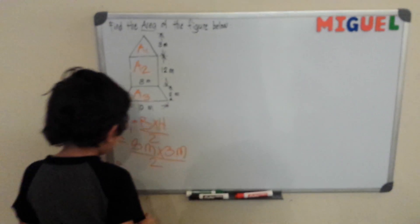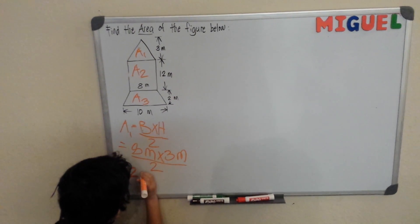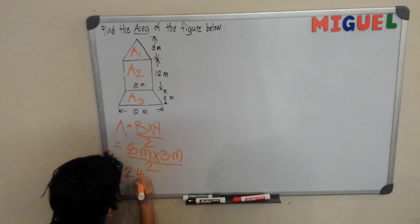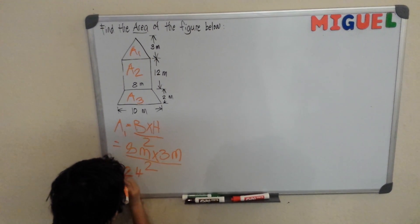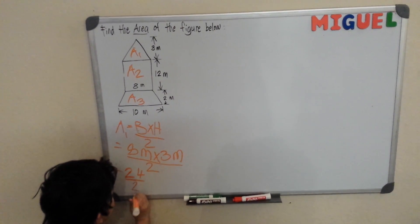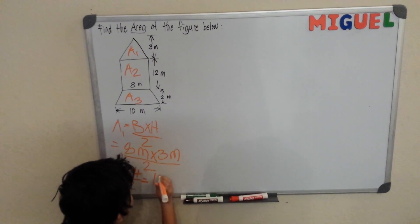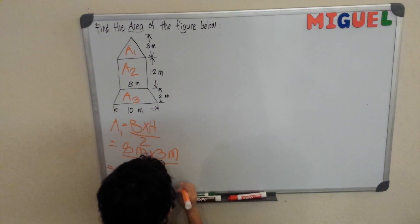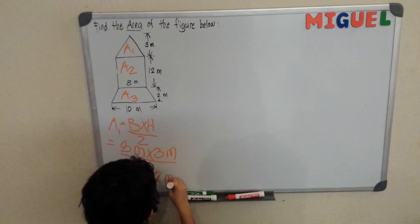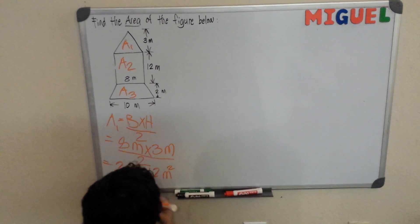8 times 3 is 24, divided by 2. So 24 divided by 2 is 12 meters squared.